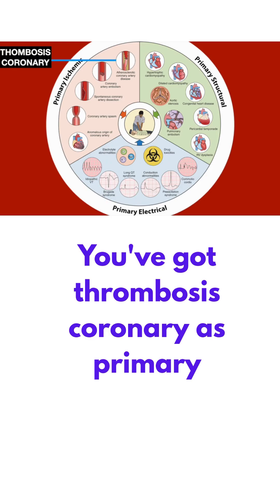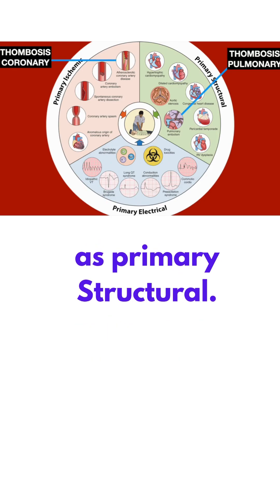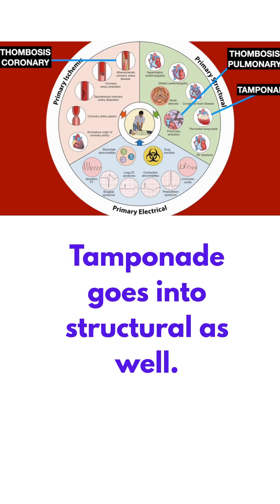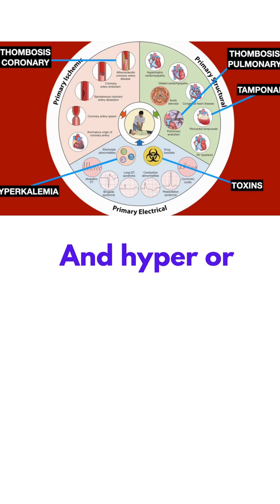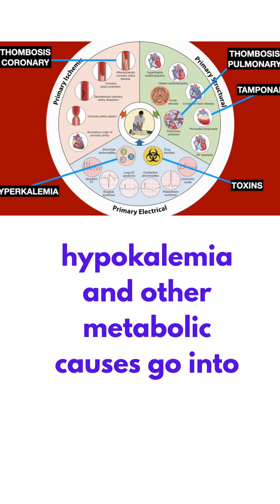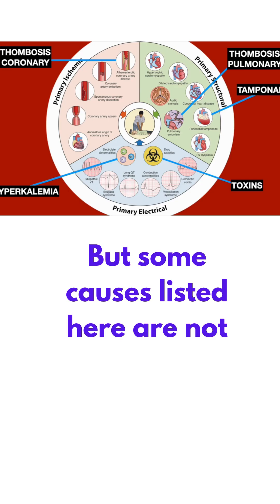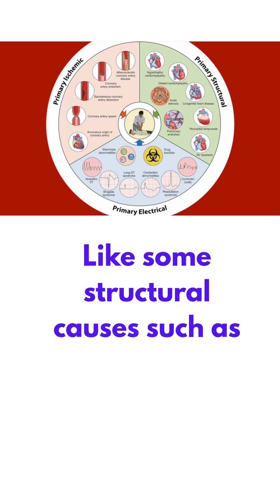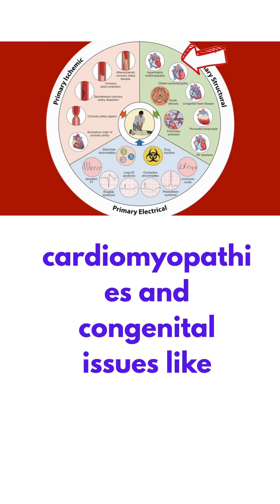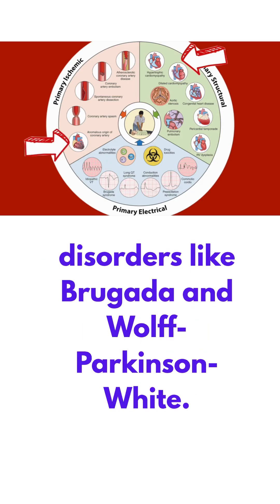Thrombosis coronary fits as primary ischemic, and thrombosis pulmonary as primary structural. Tamponade goes into structural as well. Toxins go into primary electrical, and hyper- or hypokalemia and other metabolic causes go into primary electrical. But some causes listed here are not included in the H's and T's, like structural causes such as cardiomyopathies and congenital issues like anomalous coronary arteries, and inherited electrical disorders like Brugada and Wolf-Parkinson-White.